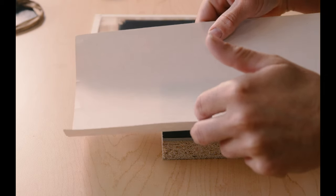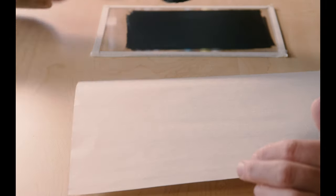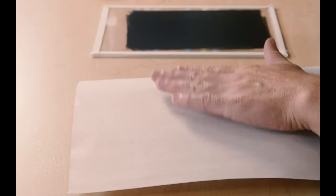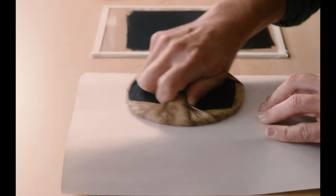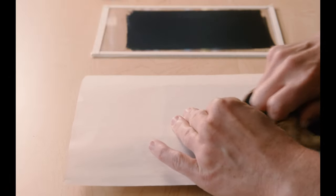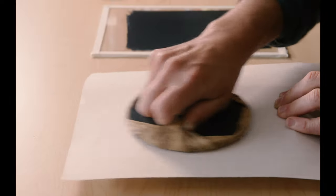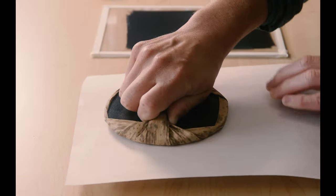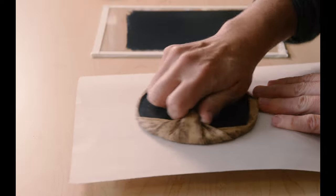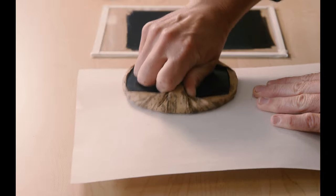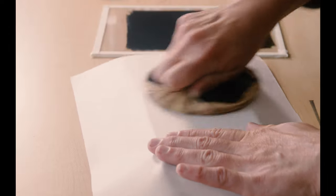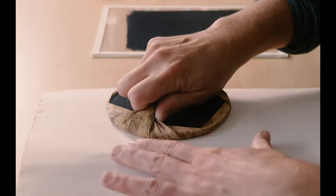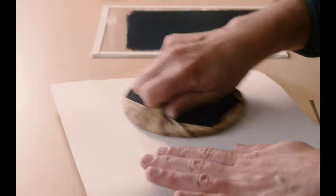So lay your paper down. Get your barren here. And you want to push down and rub it in circles. Just make sure you don't lift your paper off your print and move it. You can also use the back of a wooden spoon to do this if you don't have a barren. I think that's good. I'll see how that looks.